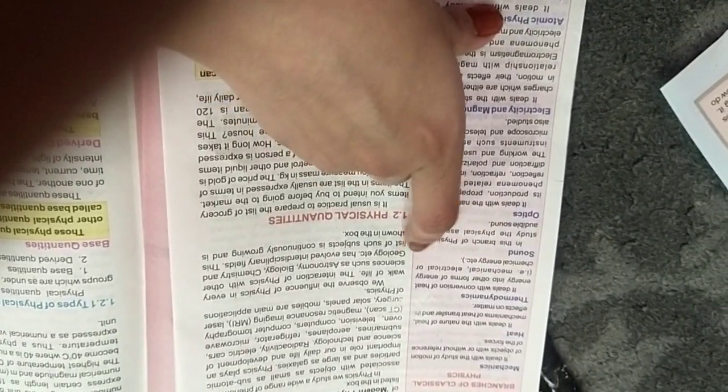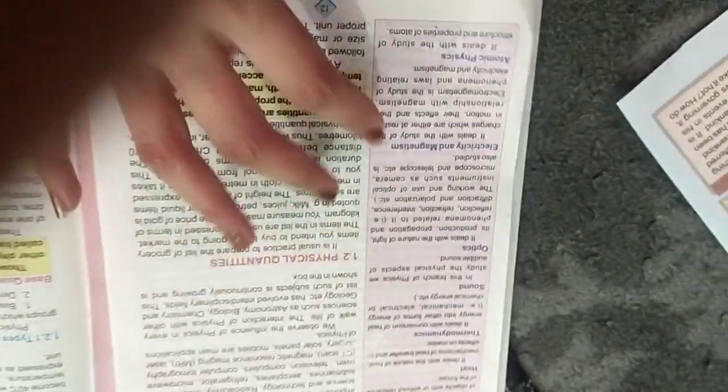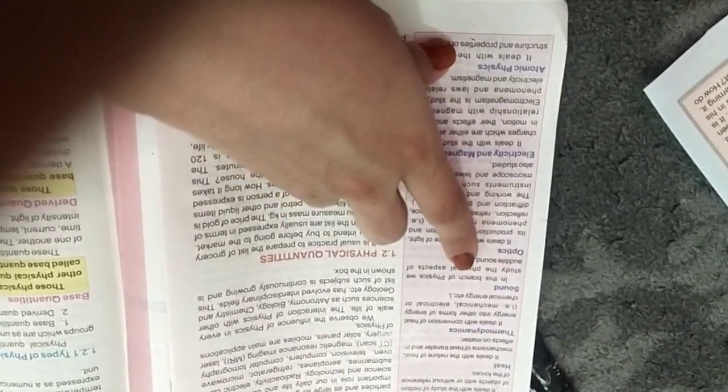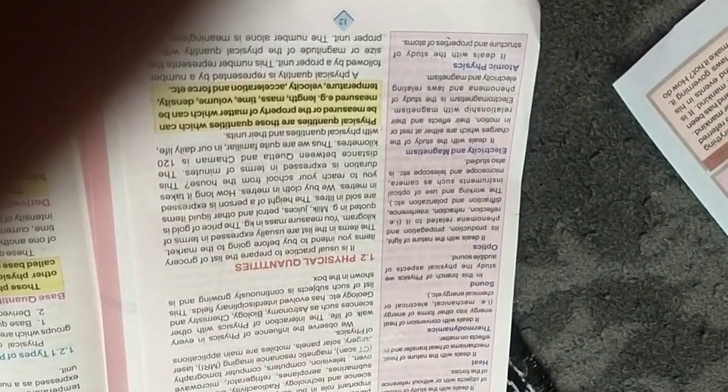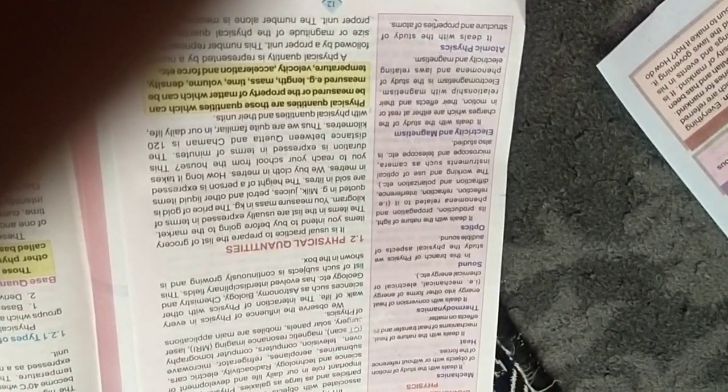It says that we have mechanical, electrical and chemical energy. There are some examples of this. Then there is sound. In this branch of physics, we study the physical aspects of audible sounds. These are physical aspects of audible sounds. We call it sound.